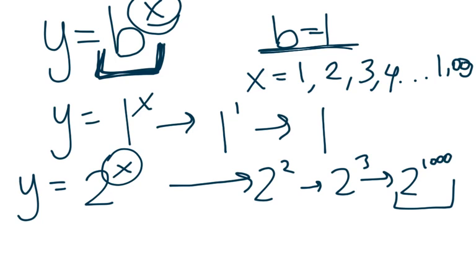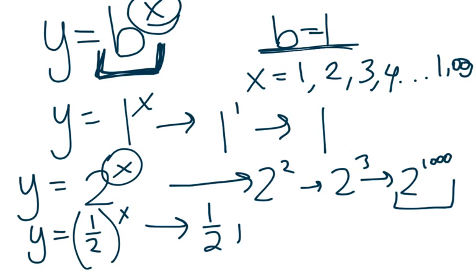If, on the other hand, the base is a number less than 1, if it is 1 half, we have exponential decay, and the larger and larger x gets, the larger the exponent gets, you're multiplying a fraction by itself over and over again, it's going to become a smaller and smaller quantity. We'll go from 1 half to 1 half squared is 1 fourth, 1 half cubed is 1 eighth, and this quantity keeps getting smaller and smaller.